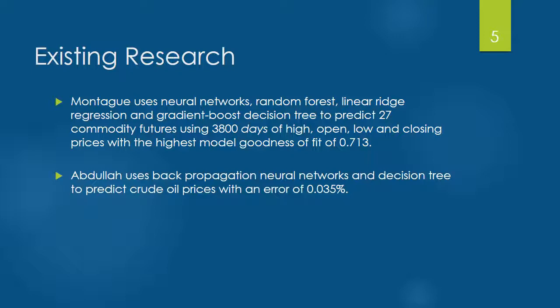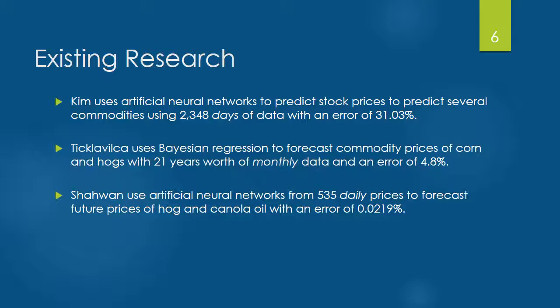Abdullah uses neural networks and decision tree algorithms to predict oil prices with an error of 0.035%. Kin uses neural networks to predict daily stock prices with an error of 31%. Tiklavika uses Bayesian regression to predict monthly corn and hog commodities with an error of 4.8%.